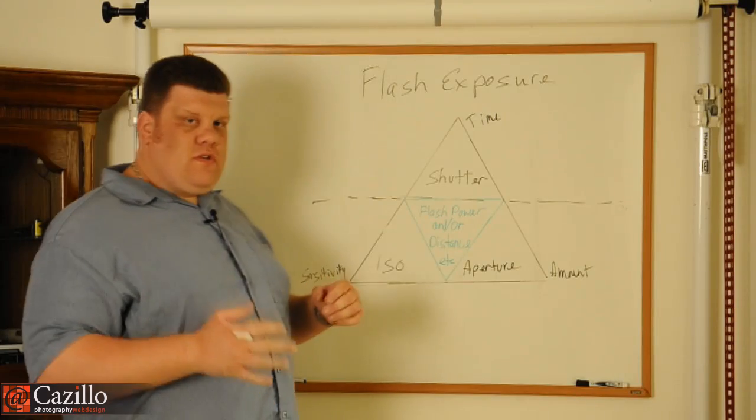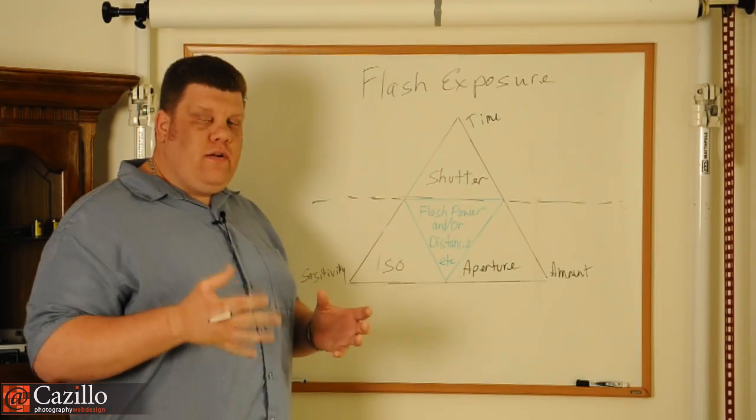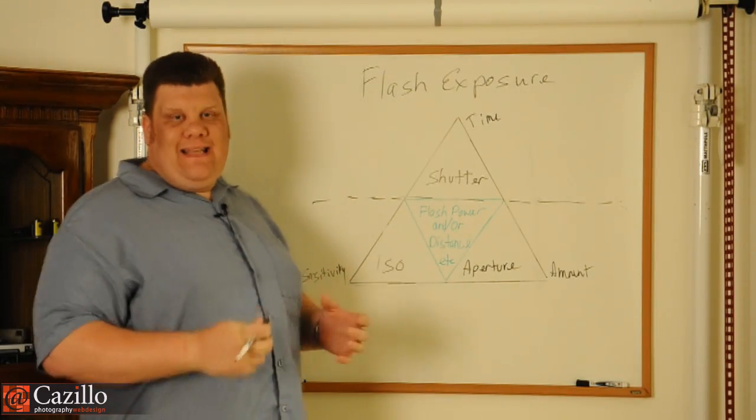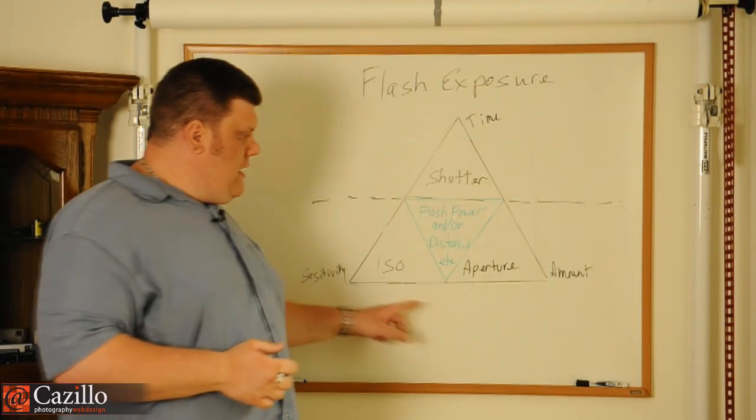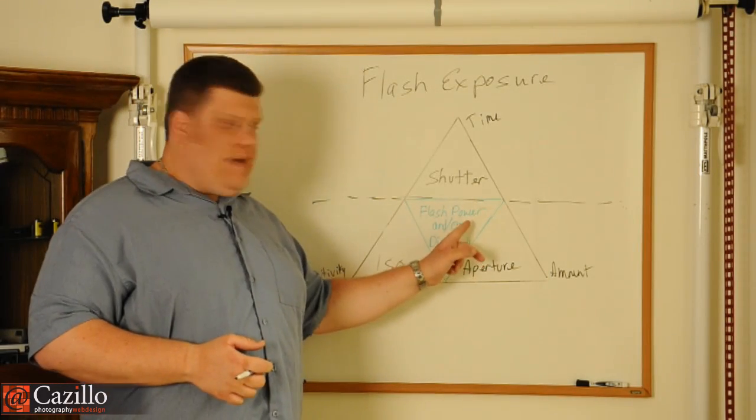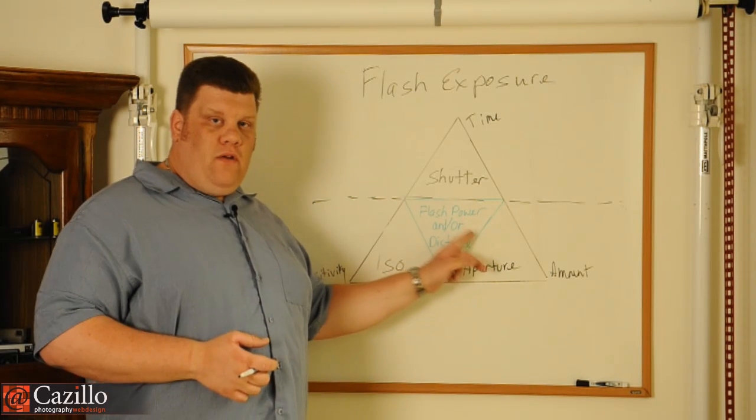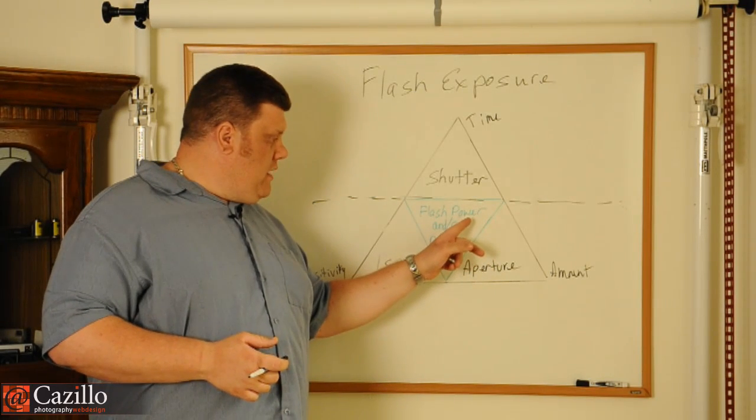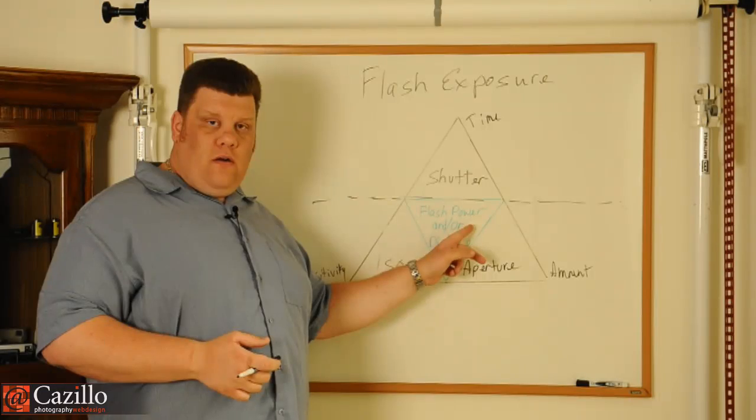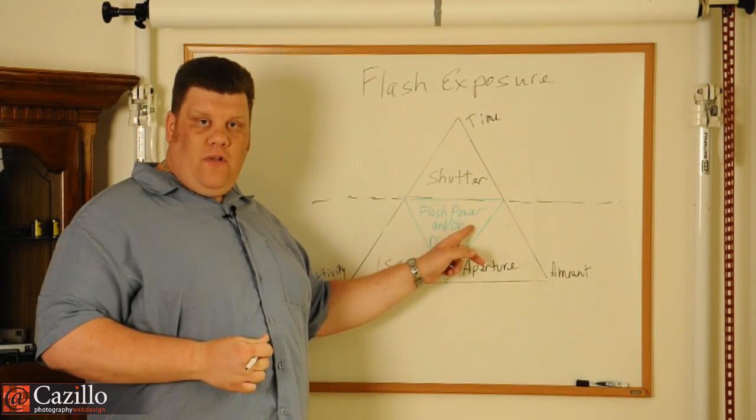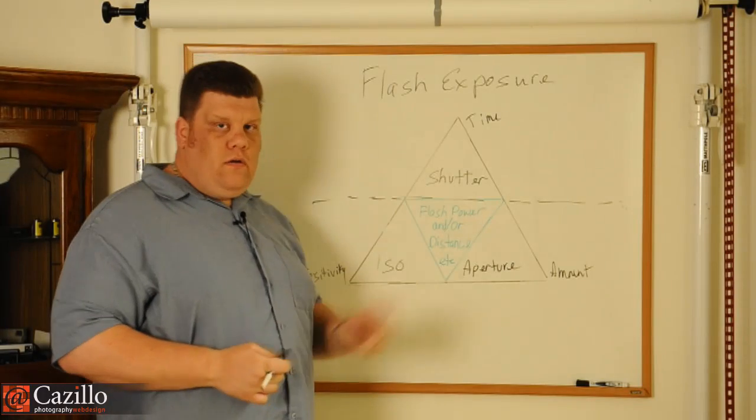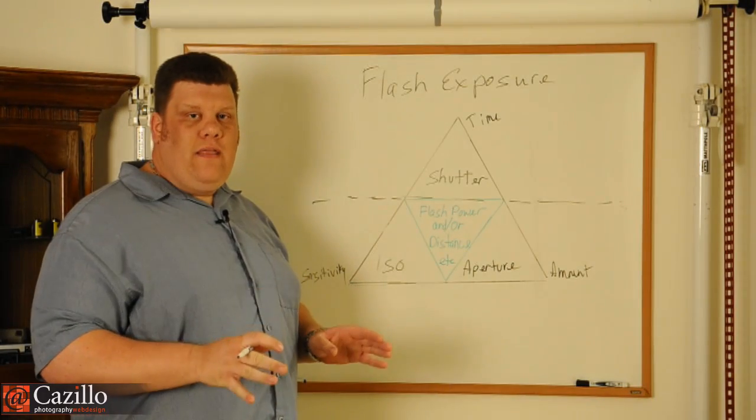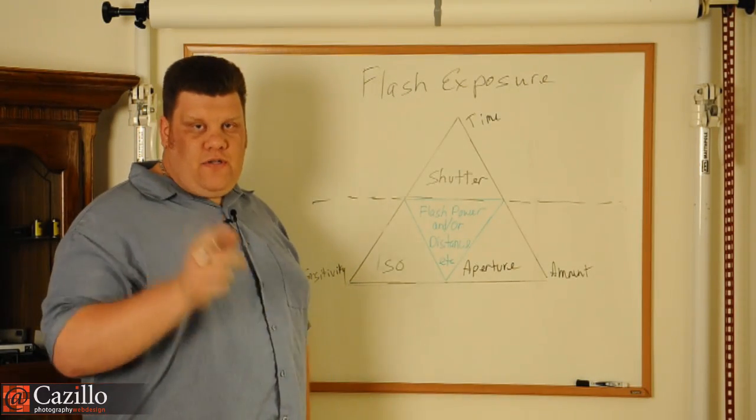So, let's do this once more so that you really understand it. This is how easy this is. Sensitivity is your ISO and your aperture. They affect the flash power. Flash power can also be affected by the amount of power in the flash and also the distance. Shutter is only available light. That's it. That easy. Let me show you some examples.